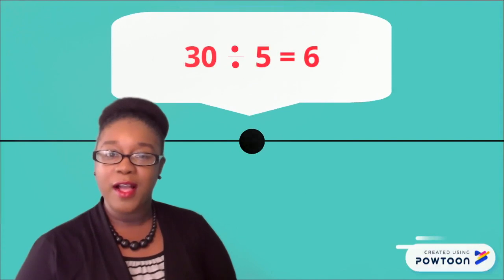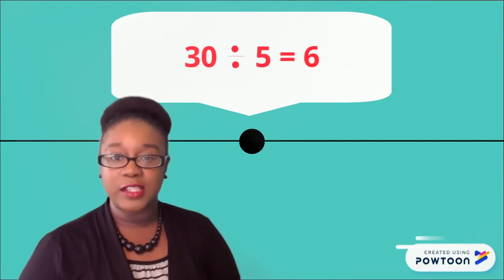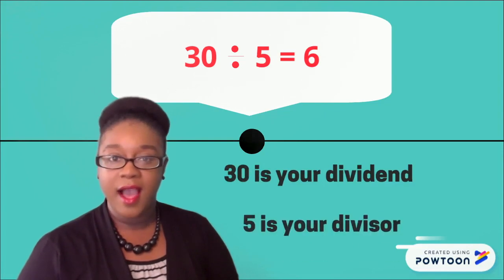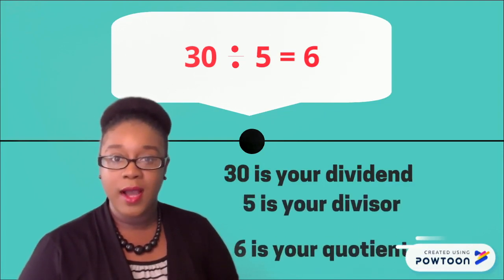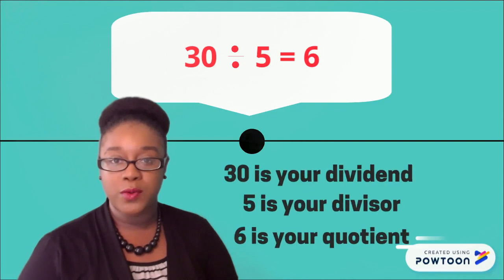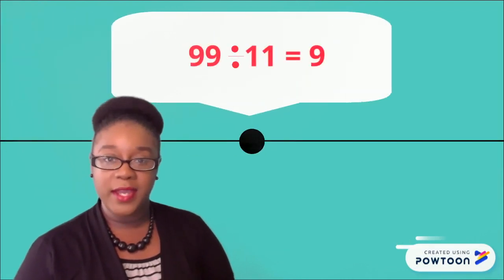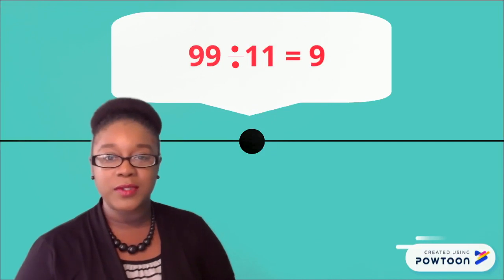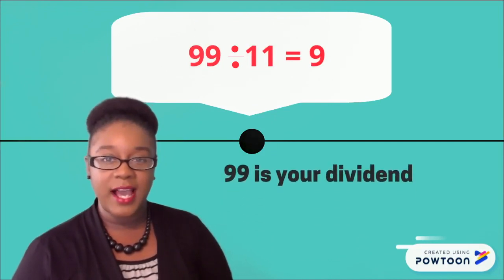In the equation 30 divided by 5 is equal to 6, 30 is your dividend, 5 is your divisor, and 6 is your quotient. In the equation 99 divided by 11 is equal to 9, 99 is your dividend, 11 is your divisor, and 9 is your quotient.